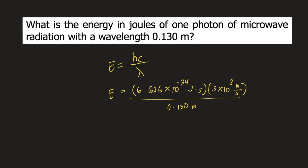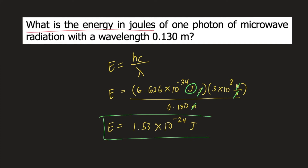Let's see how the units will cancel. Seconds will cancel, meters will cancel, so the unit for energy is joules. The problem is asking for the energy in joules, so if you plug all the numbers into your calculator and solve for the energy, this is equal to 1.53 times 10 raised to negative 24 joules. And this is the answer to the question.